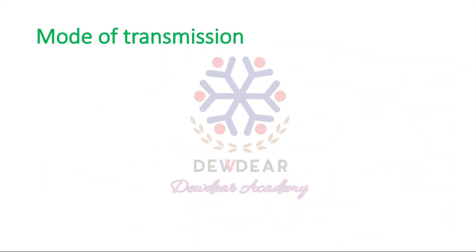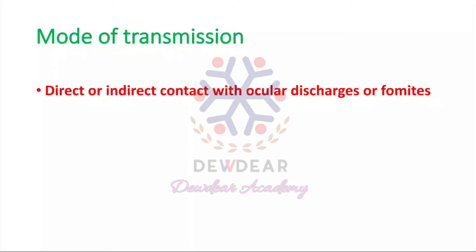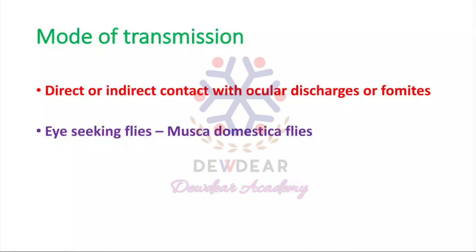Regarding modes of transmission: first, through direct or indirect contact with ocular discharges or fomites. Young children bear the heaviest burden of trachoma infections. It is spread by direct contact with eyes, nose, and throat secretions from affected individuals. Transmission also occurs through eye-seeking flies, mainly Musca domestica, which move bacteria from the eyes of young children to uninfected persons. Venereal transmission is also a mode.